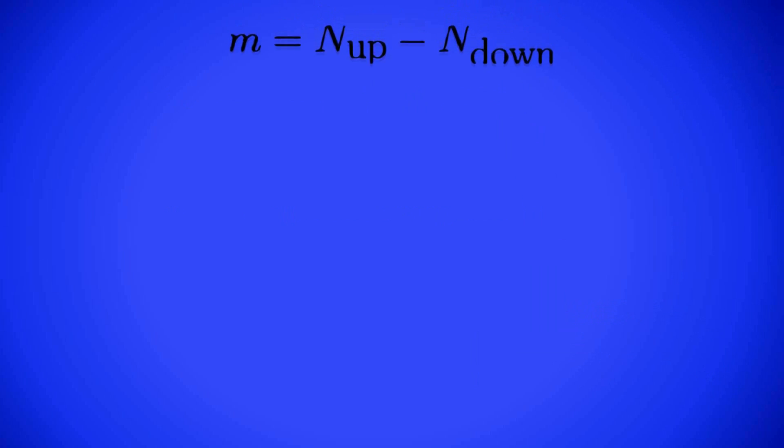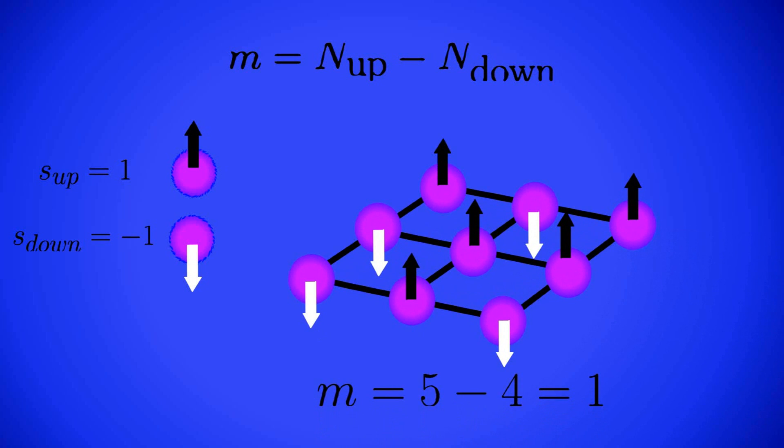But what's the difference between them? First, we can define the magnetization as the total angular momentum of all the spins, so that if we consider that the up spins add 1 to the value of our magnetization and down spins subtract 1, the difference between the number of up and down spins will be our total magnetization.